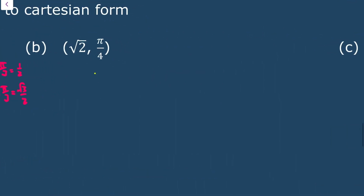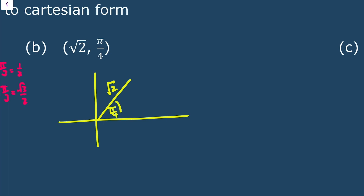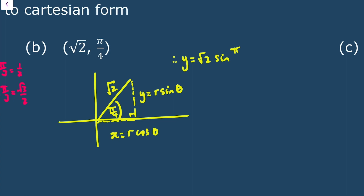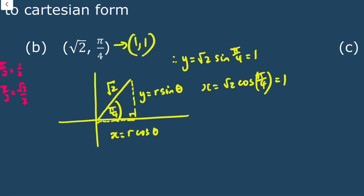For the point (root 2, pi/4), y equals root 2 sin(pi/4) equals root 2 times 1 over root 2 equals 1, and x equals root 2 cos(pi/4) equals root 2 times 1 over root 2 equals 1. So this converts to the Cartesian coordinate (1, 1).